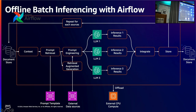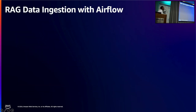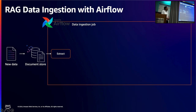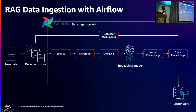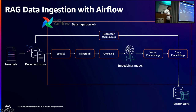The third example is retrieval augmented generation, where you use generative AI by first searching the text for applicable answers and then passing those answers to a large language model to generalize and retrieve. For RAG, extracting and ingesting data is of primary importance. You can use Apache Airflow through a sample pipeline where you extract and transform existing data, use an embeddings model to generate embeddings, and store them in a vector store — which can be on-premises or on the cloud — and offload compute to external CPU instances.